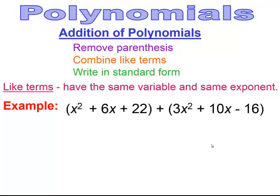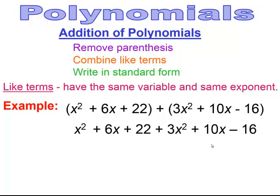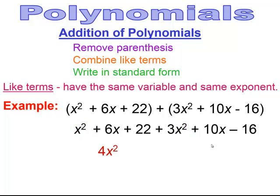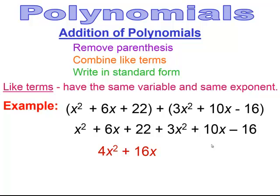Here's an example of addition of polynomials. I have two separate polynomials in parentheses separated by an addition sign. I remove the parentheses and combine like terms. x² and 3x² combine to give 4x squared (remember x² has a coefficient of 1). Then 6x + 10x gives plus 16x. Finally, 22 − 16 gives plus 6. The result, written in standard form, is 4x² + 16x + 6.